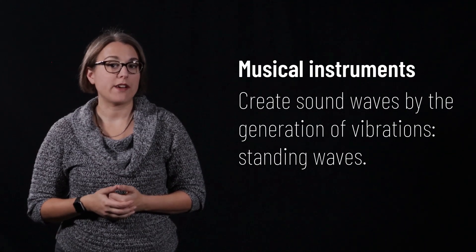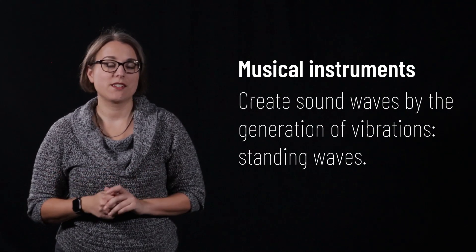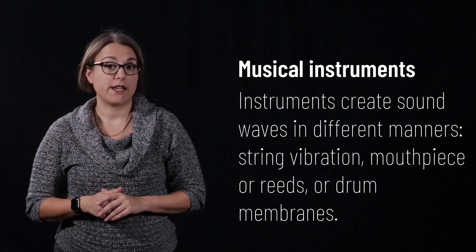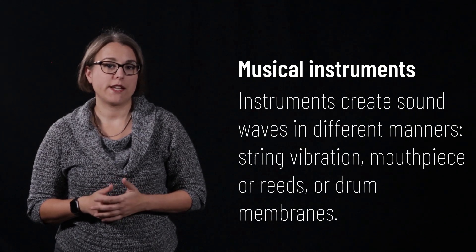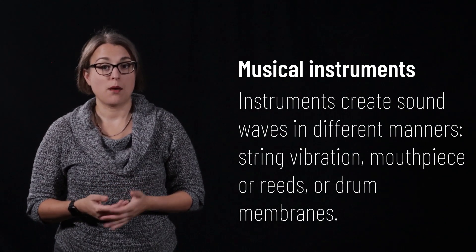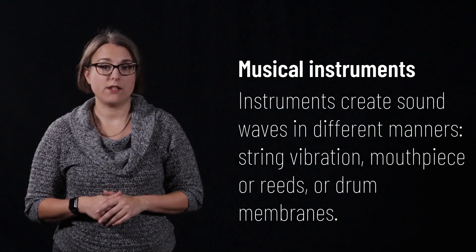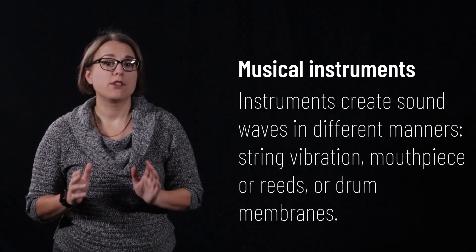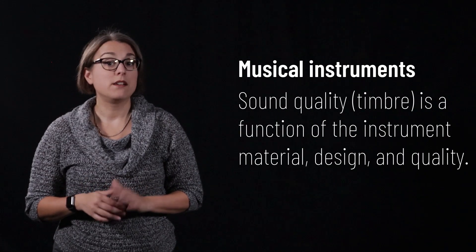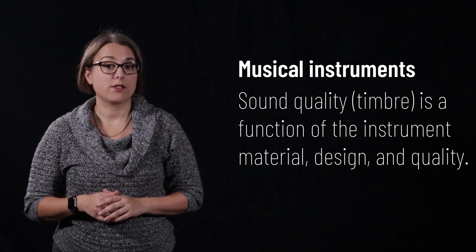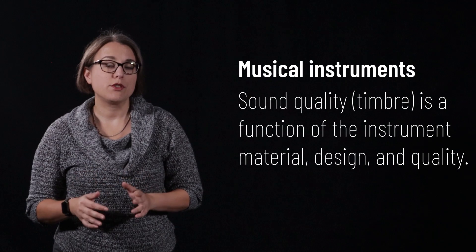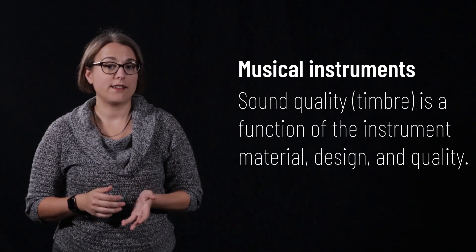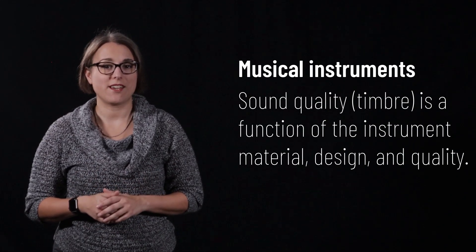Musical instruments work by creating vibrations, sound waves. Different types of instruments create sound waves differently by creating a vibration in a string, by blowing air across a reed or mouthpiece, or by creating vibrations on a membrane stretched over a drum. The quality of the sound waves, known as timbre, is produced by the materials, design, and quality of the instrument itself.